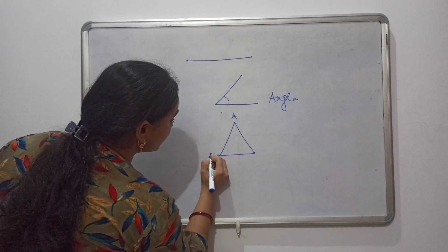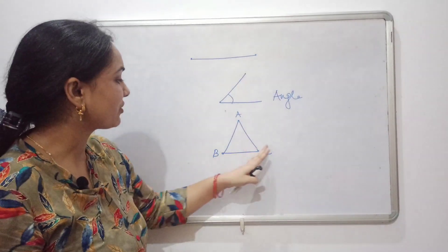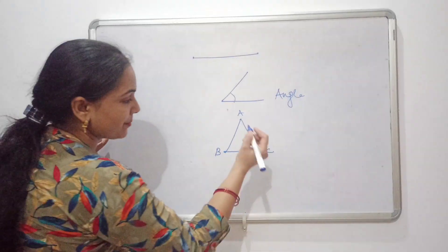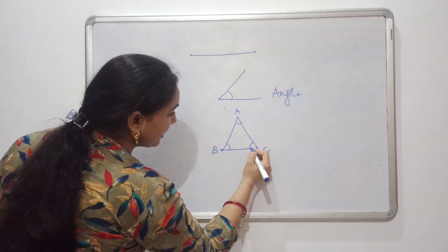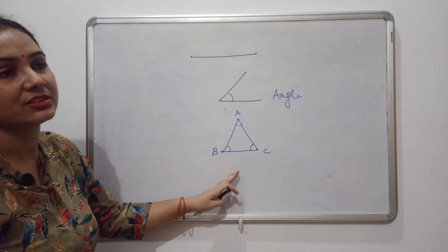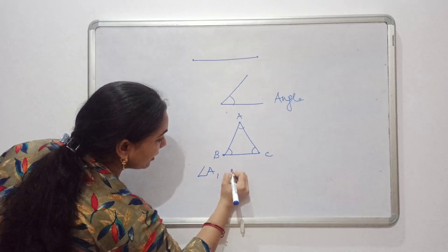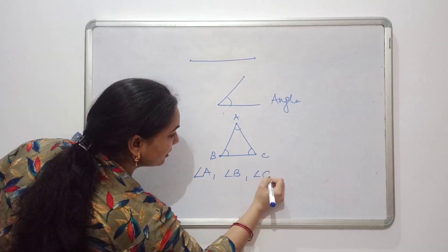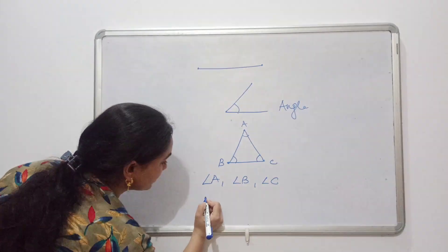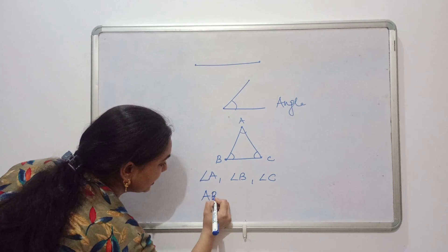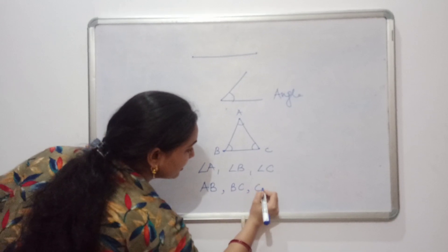So now this is a triangle ABC, in which there are three angles — angle A, angle B, and angle C. Also there are three sides: side AB, then BC and CA.